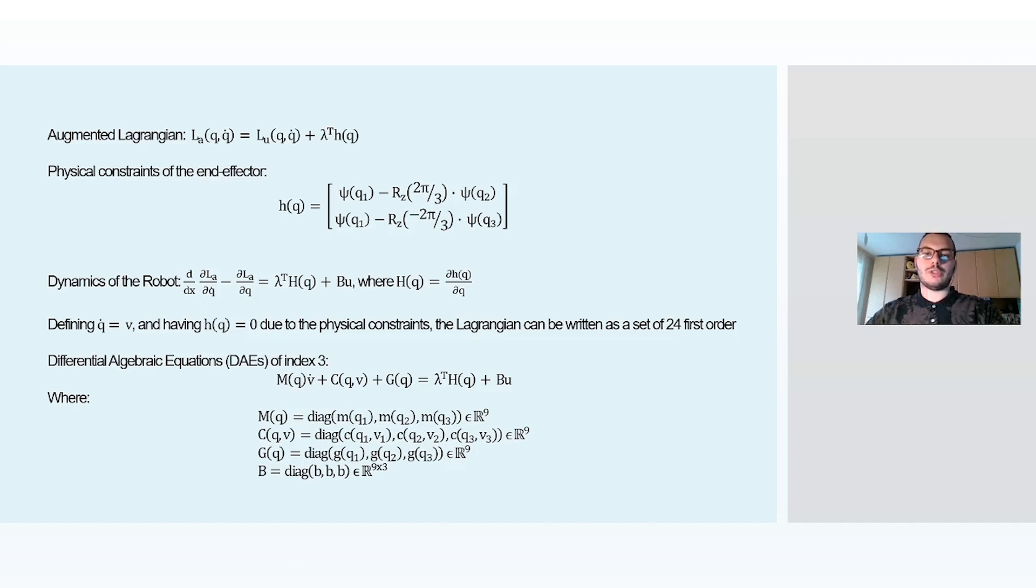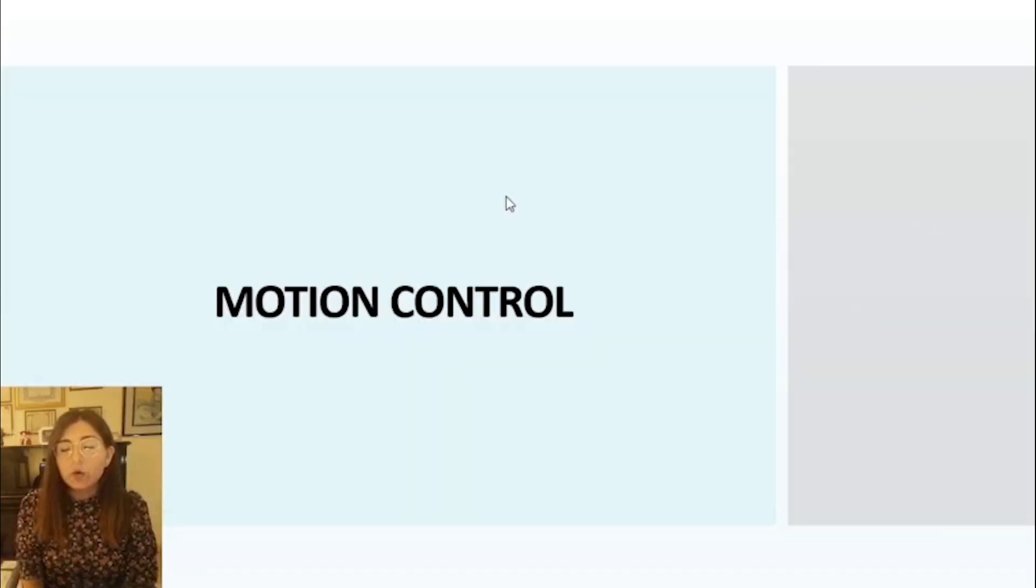Defining q dot equal to v, we can derive the Lagrangian written as a set of 24 first order differential algebraic equations.